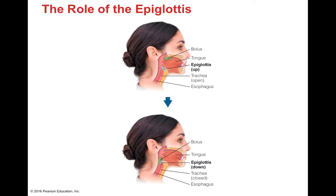The epiglottis is a small structure in the upper pharynx responsible for directing food down the esophagus. When open, it allows air to travel down the trachea. During swallowing, we take the bolus, place it at the back of the mouth, lift it with the tongue, and as we swallow, the epiglottis slides down, allowing food to slip past it and down the esophagus rather than entering the trachea, which would cause choking.